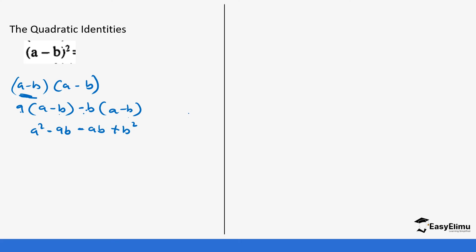It's very important you see this. Minus b times minus b becomes positive b². So this becomes a² minus ab minus ab, and minus ab minus ab becomes minus 2ab plus b². So every time we have (a - b)², we can use the identity a² - 2ab + b² to expand.